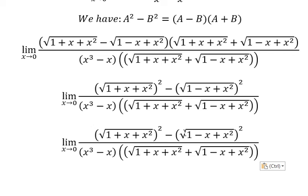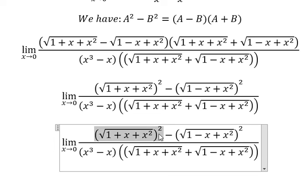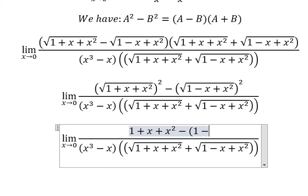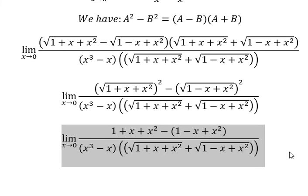Now we can cancel the square root. And we get 1 plus x plus x squared. This one, we get 1 minus x plus x squared. And now we can simplify this one.